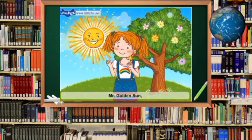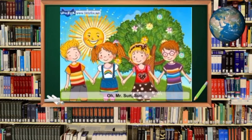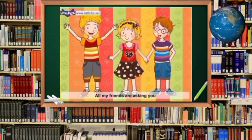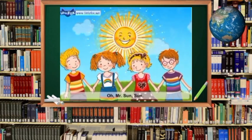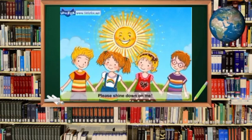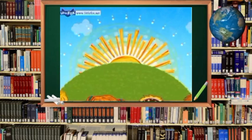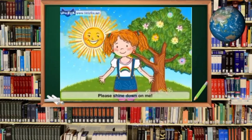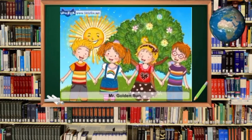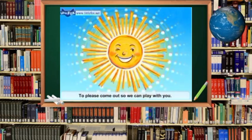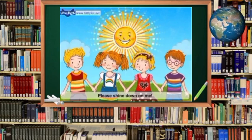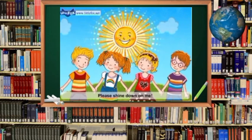Oh Mr. Sun, Sun, Mr. Golden Sun, please shine down on me. Oh Mr. Sun, Sun, Mr. Golden Sun, hiding behind that tree. All my friends are asking you to please come out so we can play with you. Oh Mr. Sun, Sun, Mr. Golden Sun, please shine down on me.